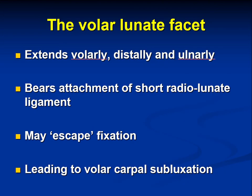The volar lunate facet extends volarly, distally, as well as ulnarly when thinking about the distal radius volar rim. As mentioned before, it bears the attachment of the short radial lunate ligament. If one were to use conventional, contemporarily available volar lock plating which is positioned at the watershed line, then indeed this volar lunate facet can escape that fixation, leading to volar carpal subluxation.